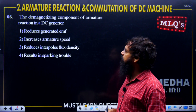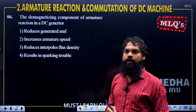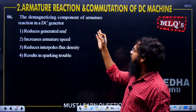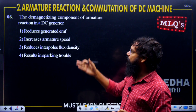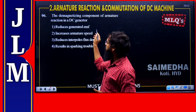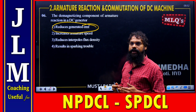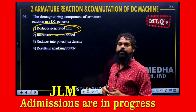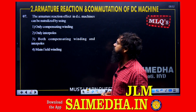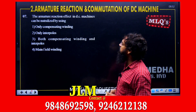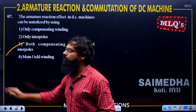The demagnetizing component of the armature reaction in a DC generator: because of the armature reaction effect, it can be neutralized by both interpole winding and compensating winding. So option number 3 is correct.